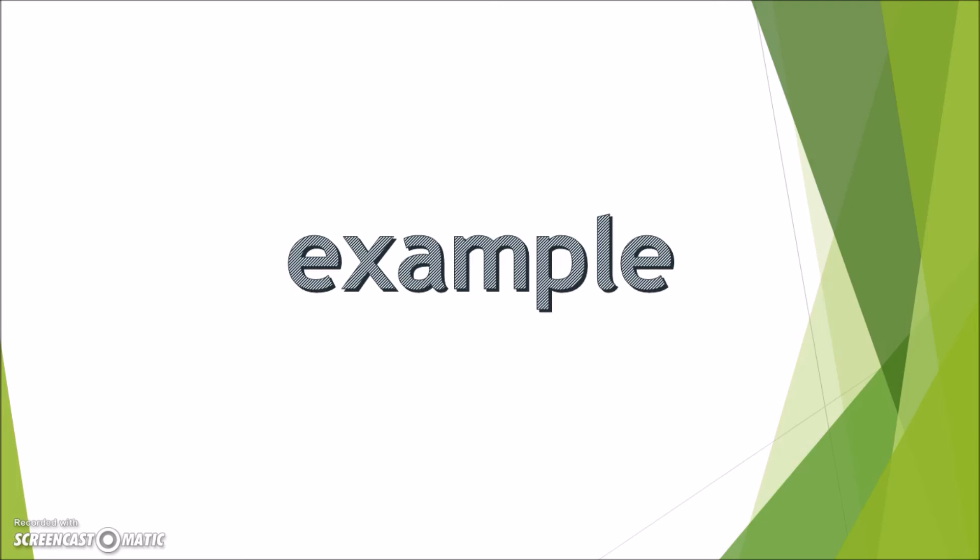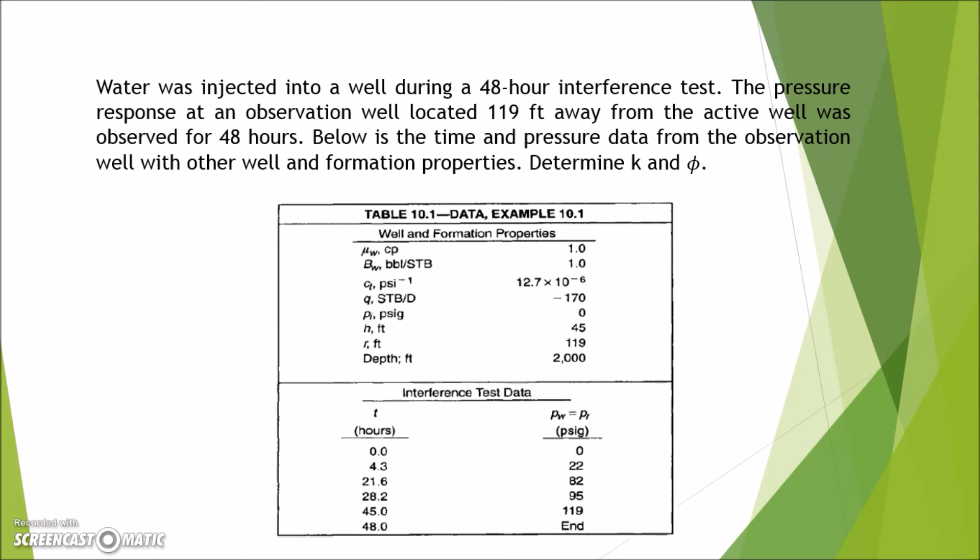Now that we have gone through all the four steps, let us take a look at the example. Here is the example given. As we can see here, in the interference test data, the time and pressure given starts at 0. We can ignore these values since we are going to plot our graph in a log log scale, because log 0 is undefined. We can also see here, in the data, the last points in the given pressure data is stated as n. We can also ignore these points, along with T equal to 48 hours, because we can plot this data. So, from all the six points given, we only need to plot four of them.